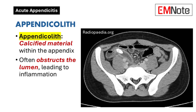Presence of appendicolith: The identification of an appendicolith — calcified material within the appendix — can support the diagnosis, as it often obstructs the lumen, leading to inflammation.